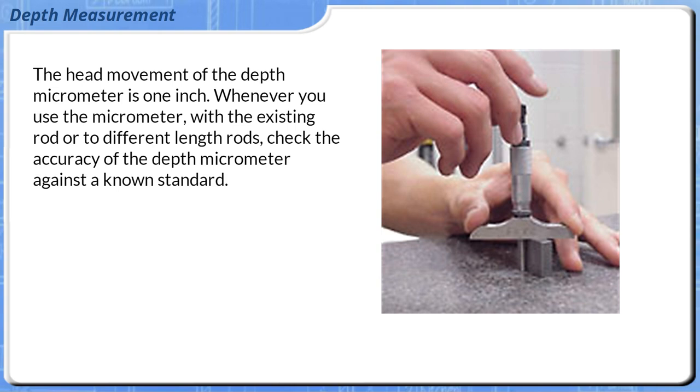The head movement of the depth micrometer is 1 inch. Whenever you use the micrometer, with the existing rod or different length rods, check the accuracy of the depth micrometer against a known standard.